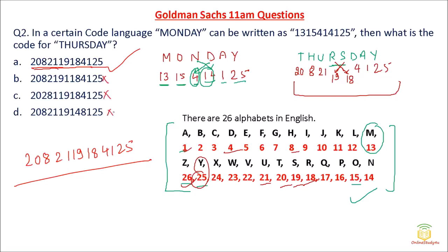Verifying the answer: 20, 8, 21, 19, 18, 4, 1, 25. Option A is correct. The other options are wrong — for example, one ends with 8125 instead of 4125, and another shows 208 instead of the correct sequence. Option A is the correct answer.